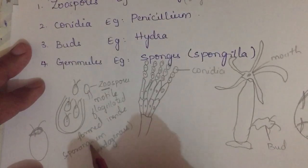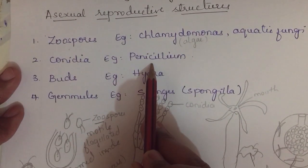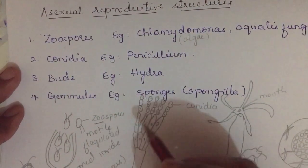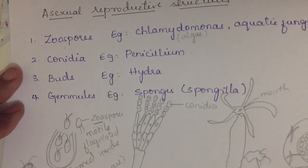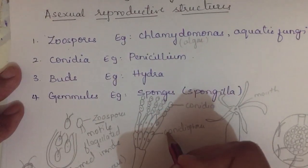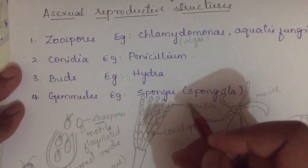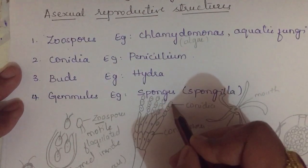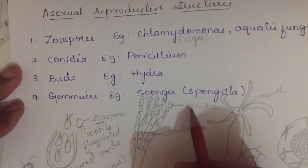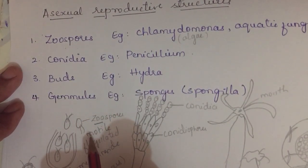The second asexual reproductive structure is conidia, produced by Penicillium. Penicillium has conidiophores, and conidia are produced at the tip of the conidiophores — outside, not inside. Each conidium, when released and finding a suitable substrate, can grow into a new Penicillium.